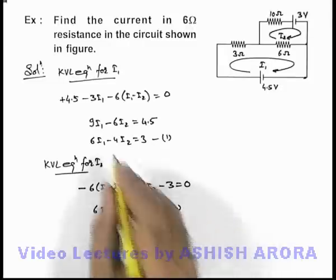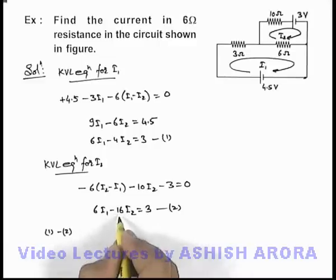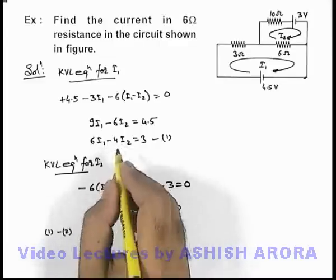Now if we subtract these 2 equations, if we take 1 minus 2 you can see this 6i1 gets cancelled out, and from 16i2 if we subtract 4i2 this will be 12i2 equal to, i2 is equal to 0.